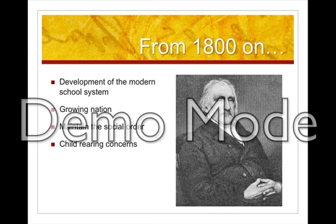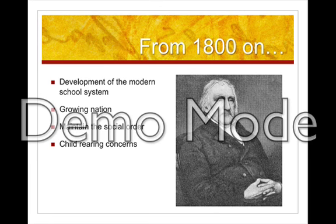Francis Wayland, president of Brown University, who wrote textbooks on ethics and political economy, serves as a model of child-rearing concerns. His example reflects attitudes common among American Protestants in the 19th century. They were concerned that children would exhibit willfulness — meaning disobedience — which they saw as a vice. If a child was to become a useful member of society, they needed to respect authority. Conformity to the expectations of adults was the purpose of discipline. Children who disregarded adults were likely to become poor citizens who ignored the rules of society.